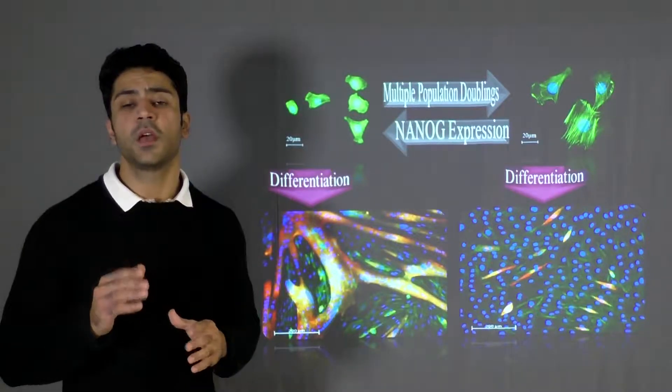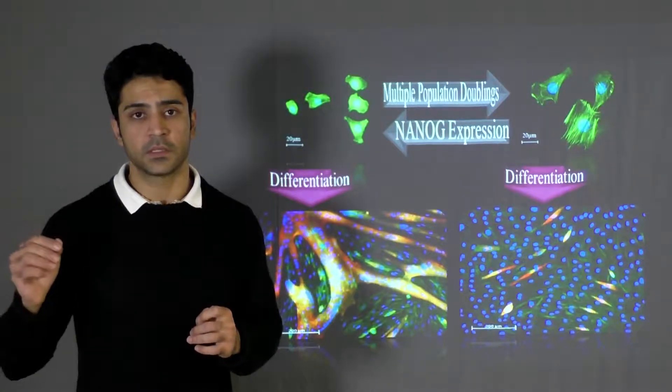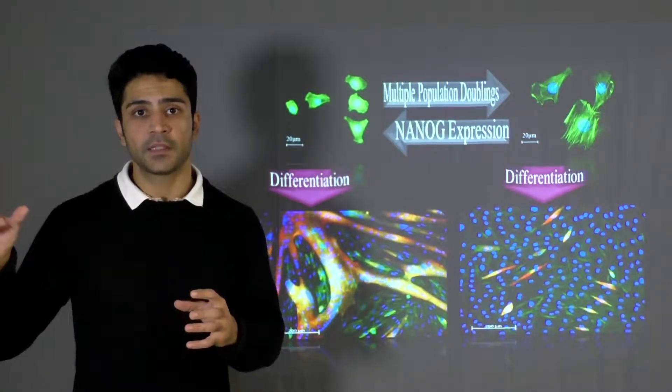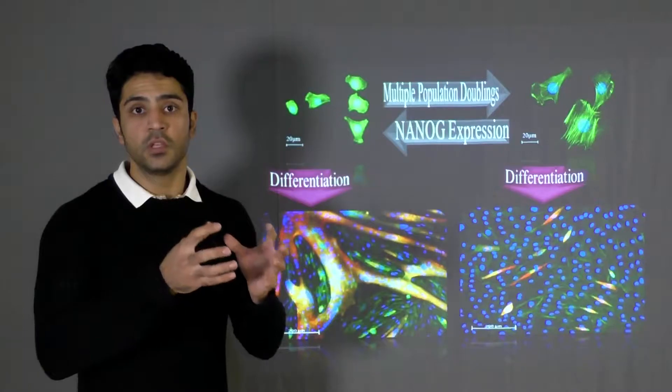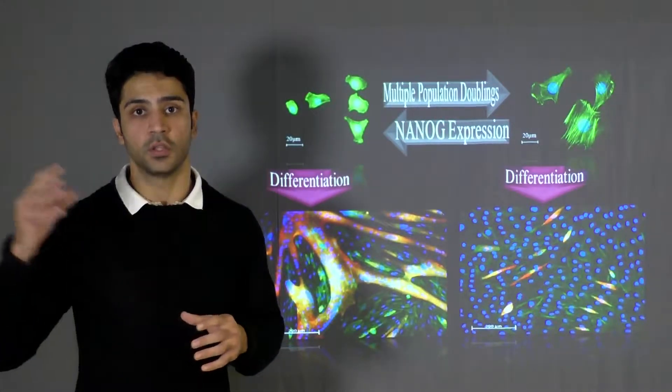Interestingly, we observe that by re-expressing NANOG in old stem cells, the regenerative capacity becomes similar to young stem cells. Therefore, NANOG has some anti-aging effects on old stem cells.